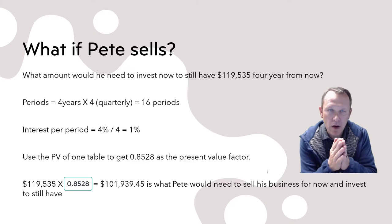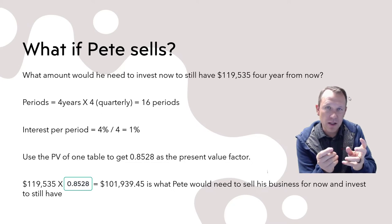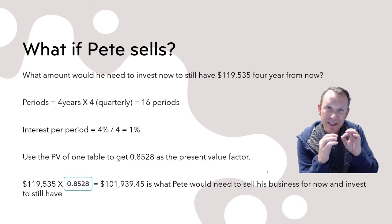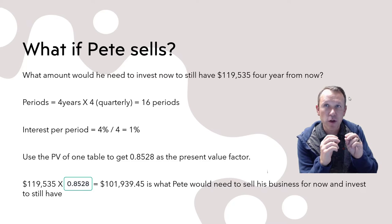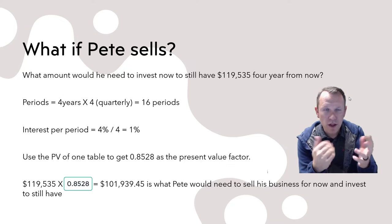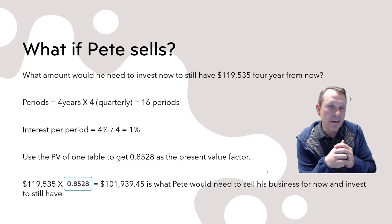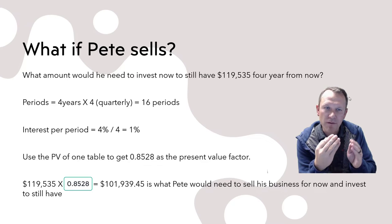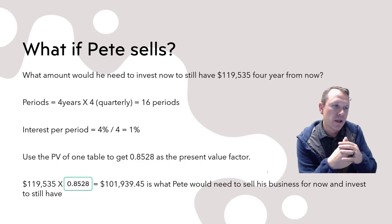Now, what if Pete sells? We're really getting to the key question: how much does he have to sell it for now to make it worth his time? Specifically, what amount would he need to invest today to still have $119,535 four years from now?